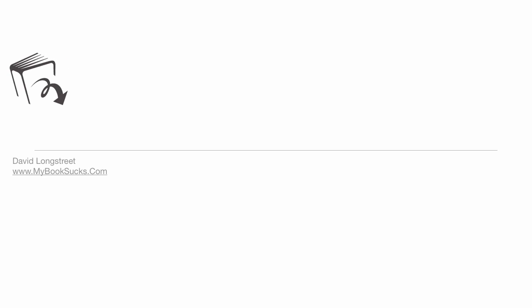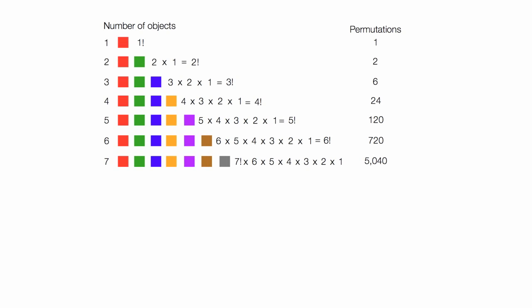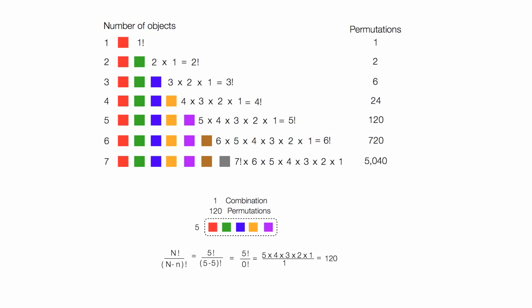In this video, I'm going to talk about permutations and combinations, and I'm going to use these little red, green, and blue squares. I'm going to calculate the permutations for seven objects, between one and seven objects, and I'm going to show you the official equation. It looks kind of nasty, but I will walk you through it.